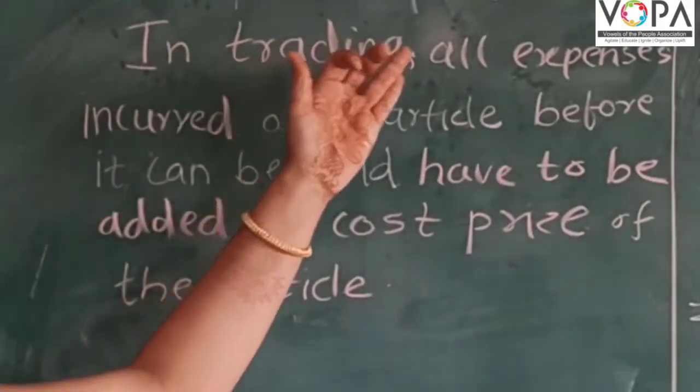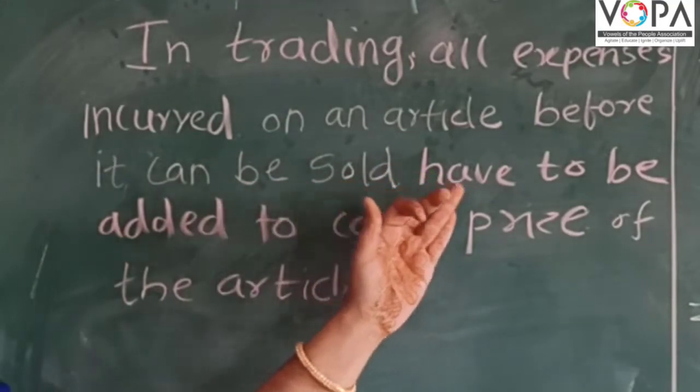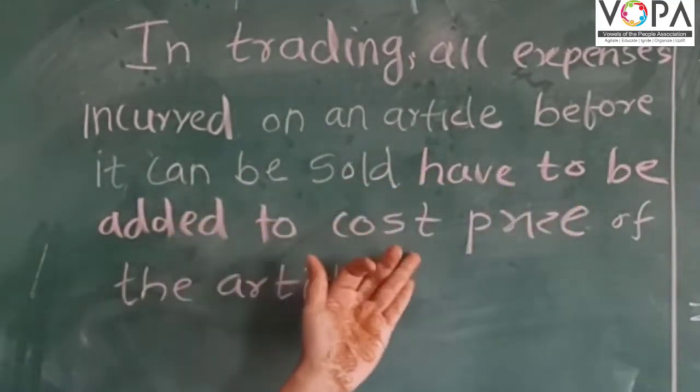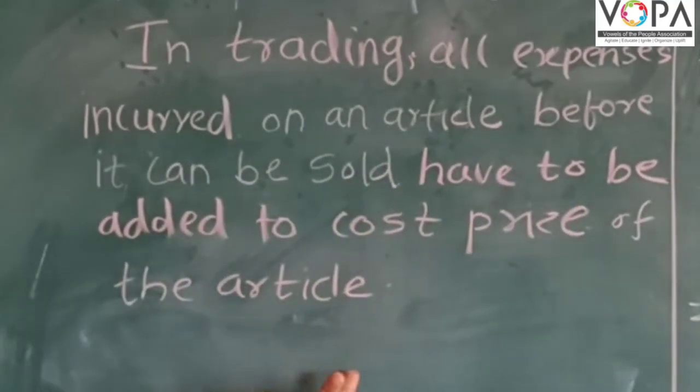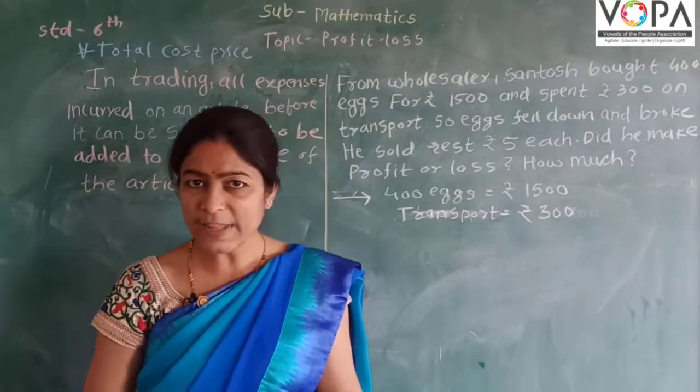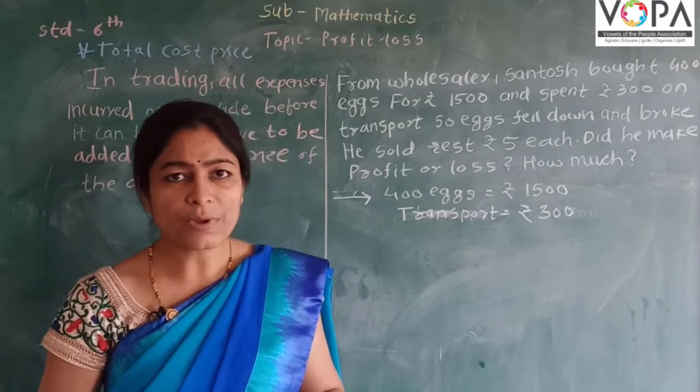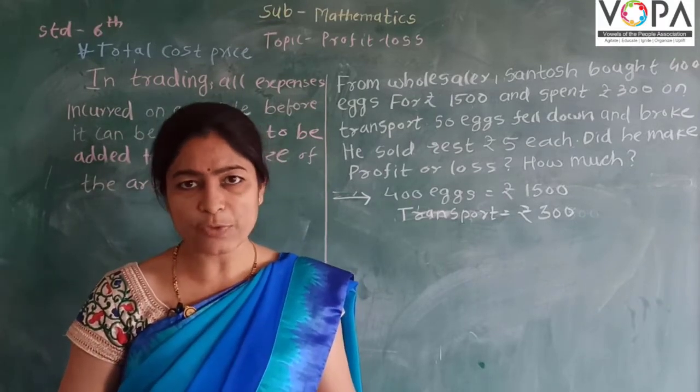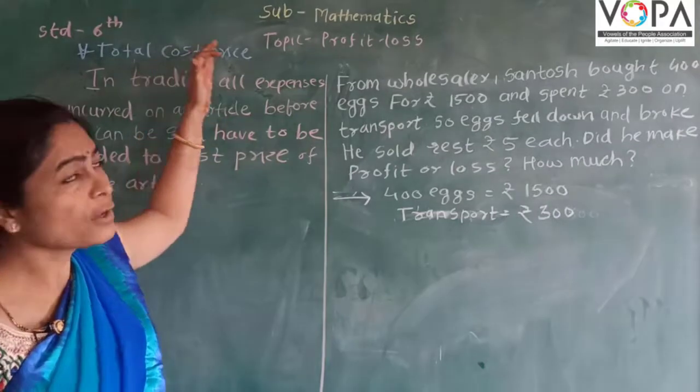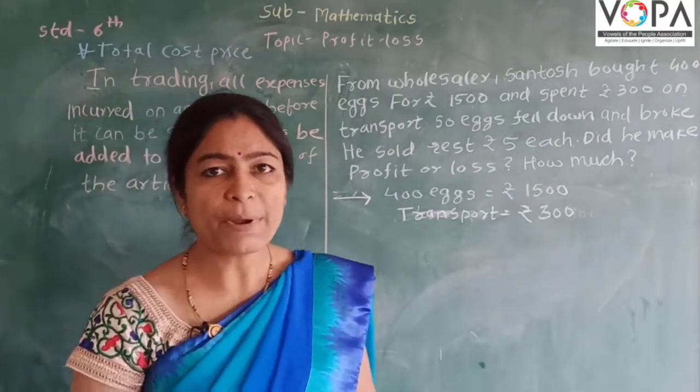In trading, all expenses incurred on an article before it can be sold have to be added to the cost price of the article. This is the fact that we have to find out.